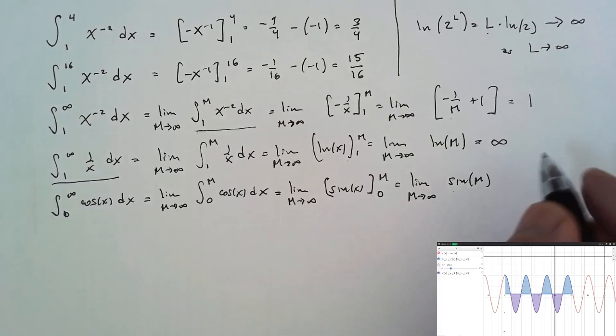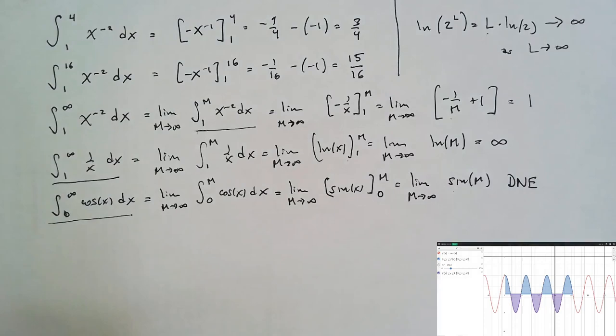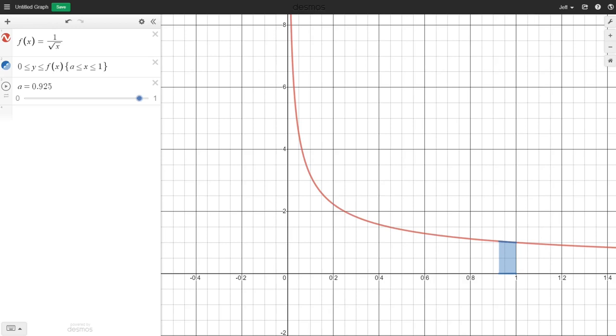Now let's look at the function 1 over square root of x. And let's consider the area under this curve between 0 and 1. Because the function 1 over square root of x is unbounded at 0, we can only evaluate an integral over an interval from a number very close to 0 to 1. So this integral of 1 over square root of x from 0 to 1 is also improper because our integrand is unbounded at one of the endpoints.